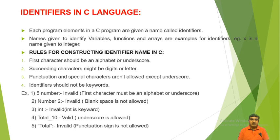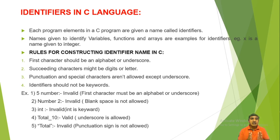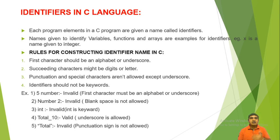Now, what is an identifier? Each program element in a C program is given a name called an identifier. Names given to identify variables, functions, and arrays are examples of identifiers. For example, 'x' or 'number' is a name given to an integer variable.